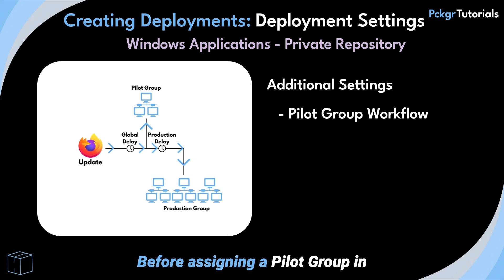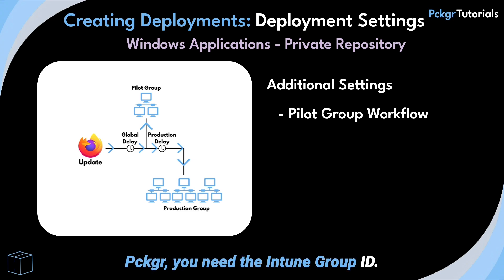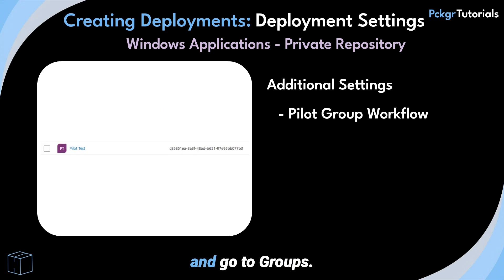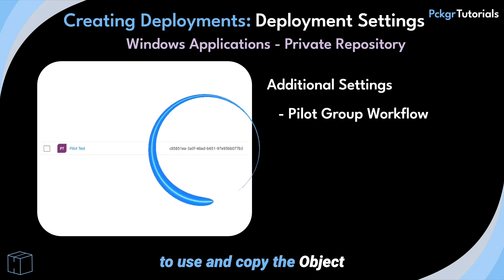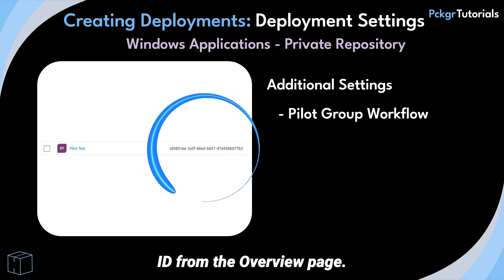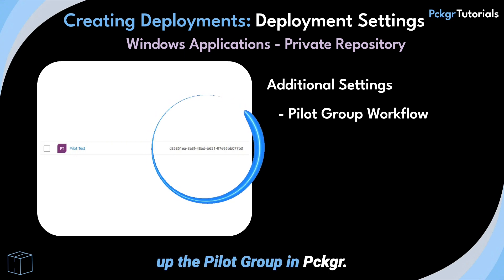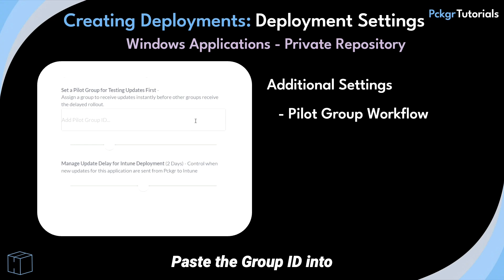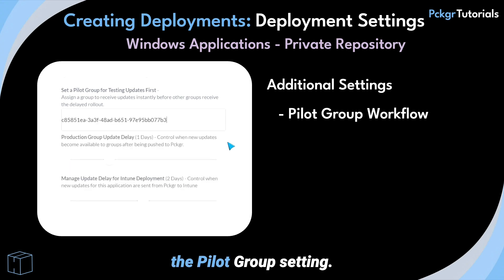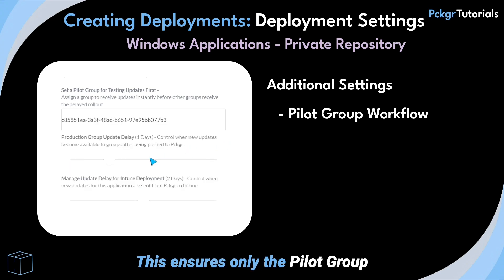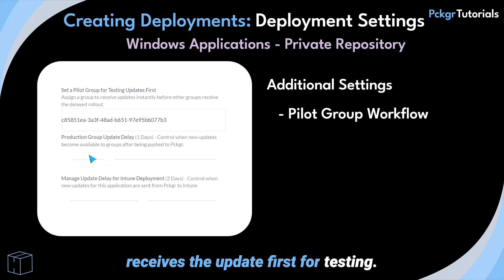Before assigning a Pilot Group in Packager, you need the Intune group ID. Open Microsoft Intune and go to Groups. Click the group you want to use and copy the object ID from the Overview page. You'll use this ID when setting up the Pilot Group in Packager. Paste the group ID into the Pilot Group setting. This ensures only the Pilot Group receives the update first for testing.